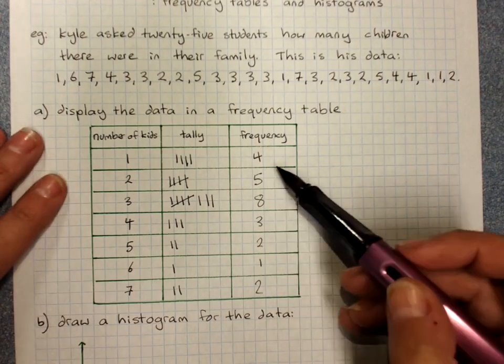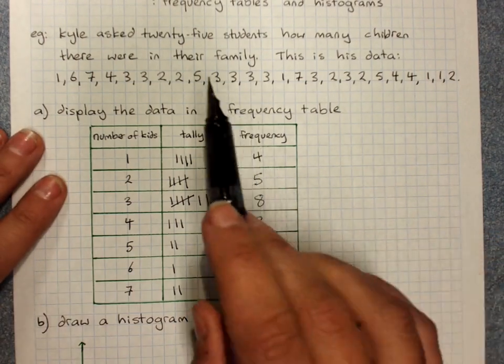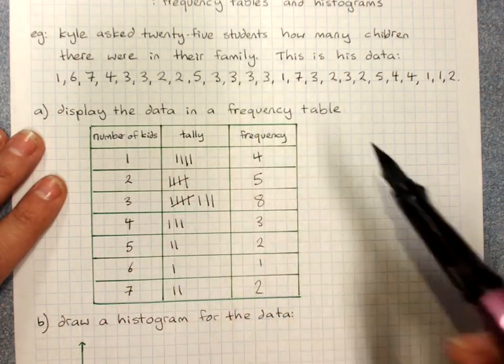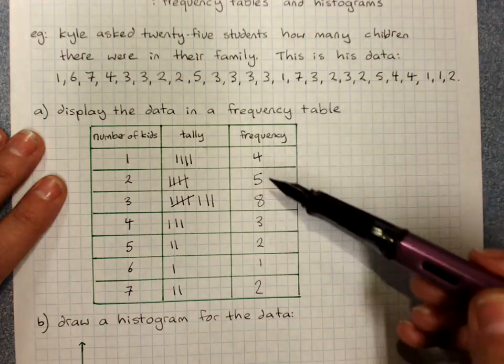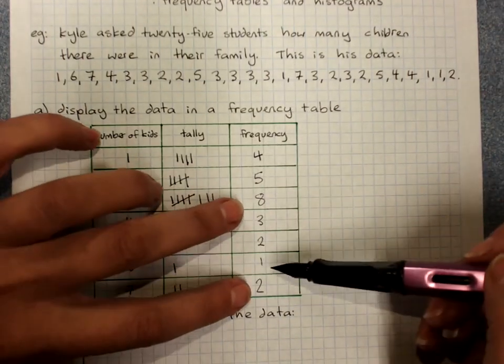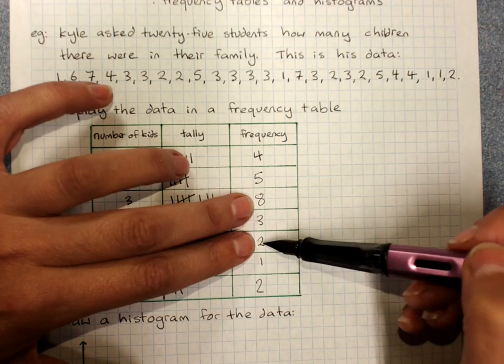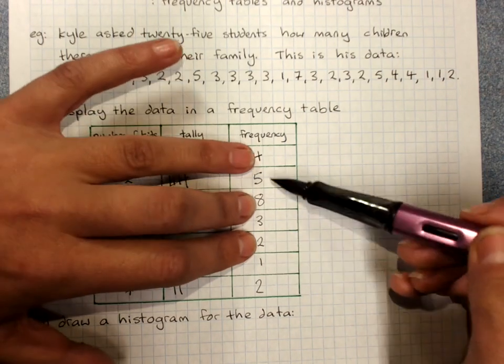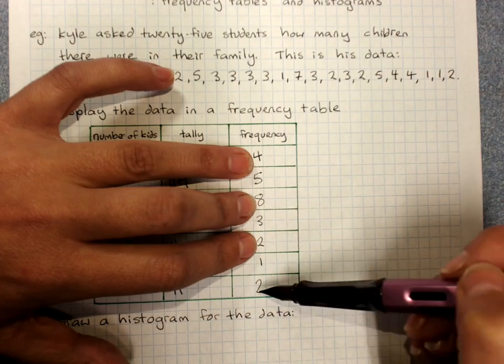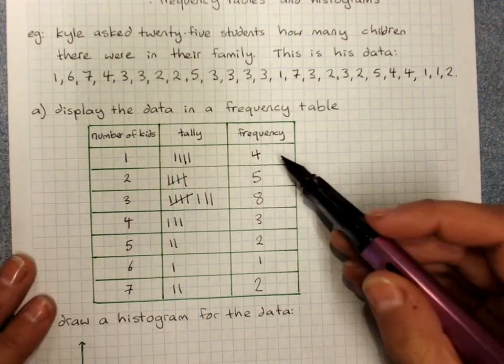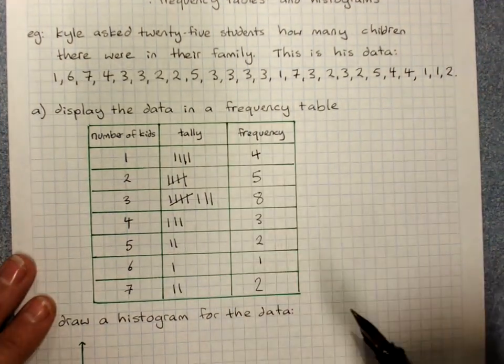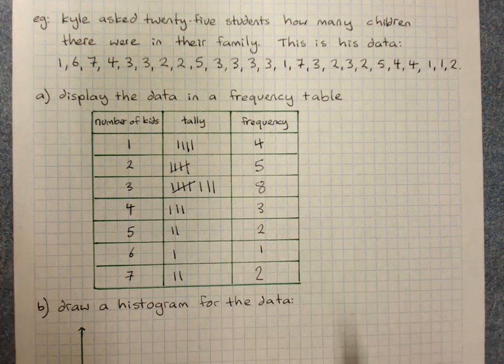And a really good check to do is just to quickly add these up because Kyle asked 25 students. So there should be 25 people here. That's 10, 8 and 2, 4 and 5 and 1. That's 10. That's 20 and 5. So if you get this right to the number that you should have, that's probably a good sign you haven't missed anybody.